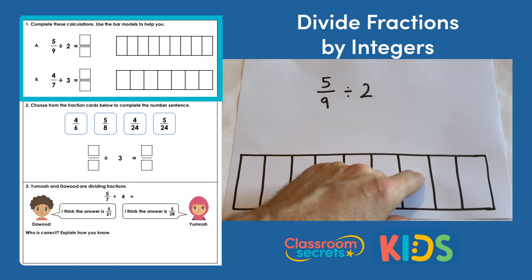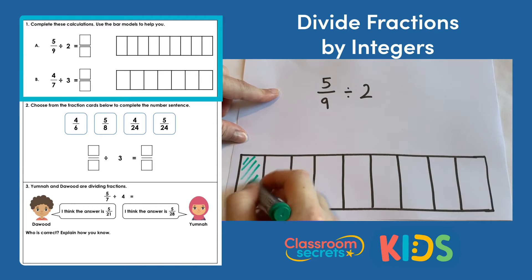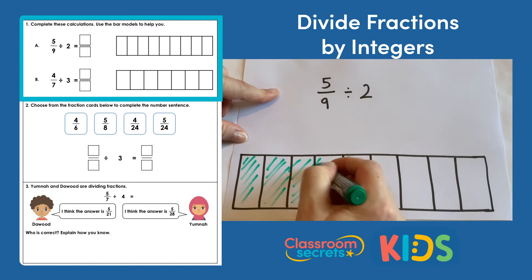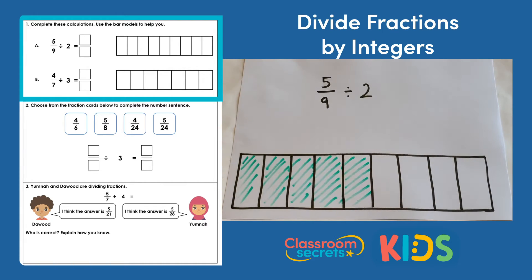1, 2, 3, 4, 5, 6, 7, 8, 9. So we see each of these as a ninth. Now we're talking about 5 ninths so I'm just going to shade that in.